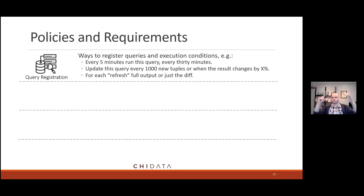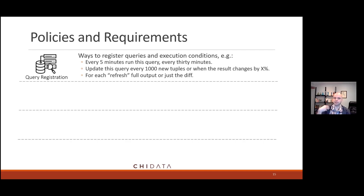The policies and requirements layer is very different from traditional database systems and needs changes to improve resource utilization. One key element is query registration — how do people specify queries with more specific performance objectives? For example: every five minutes, run this query for the next 30 minutes; run it when I see this many tuples or when the result changes by some threshold; and when you run this interval, should it rerun the entire result or just show the difference from the prior result? We're also thinking about push versus pull — can we build more asynchronous models where somebody gets notified when a result changes?